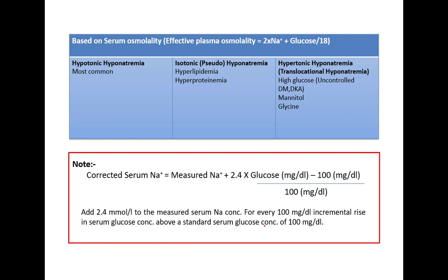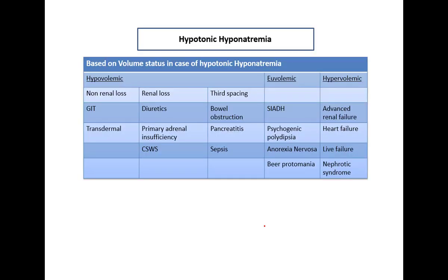In hypertonic hyponatremia, elevated osmolality from high glucose causes water to shift from intracellular to extracellular, diluting sodium. In HHS or DKA, initial ABG may show low sodium due to high glucose; as glucose is corrected, sodium rises and IV fluids should be changed from 0.9% NS to 0.45% NS. To calculate corrected serum sodium: measured sodium + 2.4 × [(current blood glucose − 100) ÷ 100], adding 2.4 mEq/L for every 100 mg/dL rise in glucose above 100.